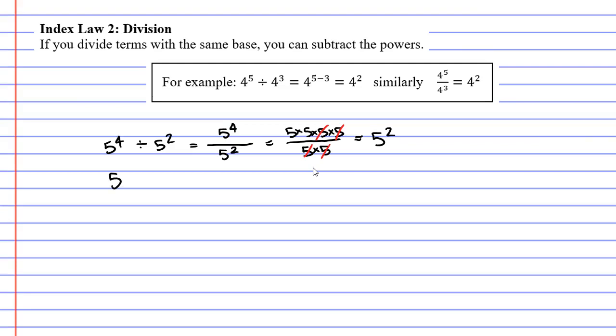You may have noticed that this can be done quite simply by subtracting the powers, by going 4 minus 2, which gives us 5 to the power of 2.